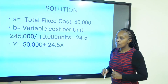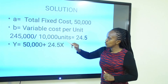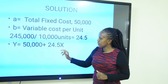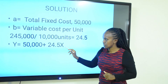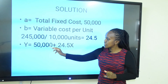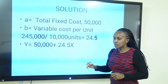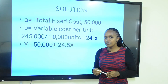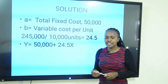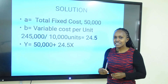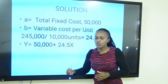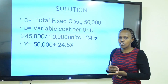In our cost estimation, we only require A and B. A is the fixed cost of 50,000 and B is 24.5. Therefore our cost estimation equation is y = 50,000 + 24.5x. In the account analysis method, you don't need x and y data like the high-low method or regression analysis. You simply analyze the accounts given and determine whether each cost is fixed or variable.